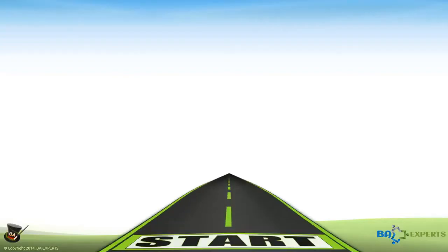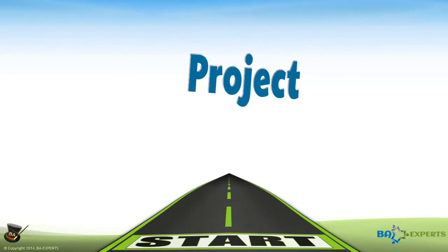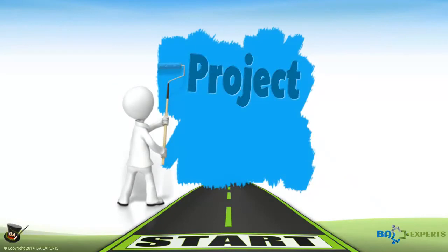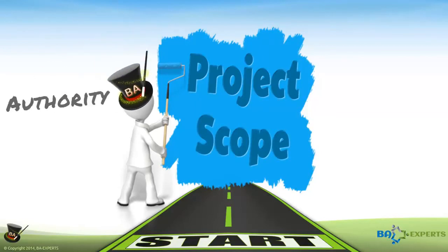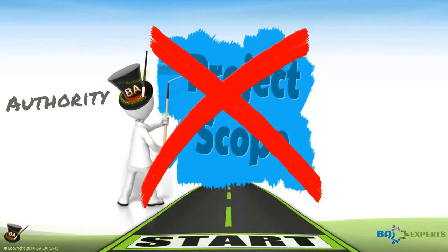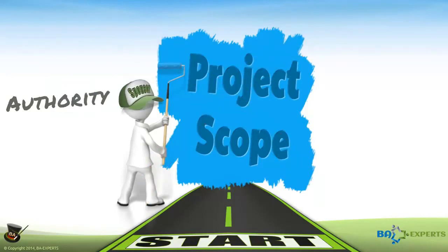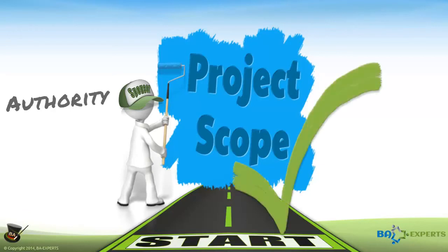At the very beginning of any project, one of the most important decisions that someone has to make is, what are the boundaries of this project? Or, put differently, what is the project scope? With only the authority of the one wearing the BA hat, I cannot make a decision regarding the scope of the project. A project sponsor — the common title for the individual in the organization who is funding a project — or someone with similar authority has to define the project scope.